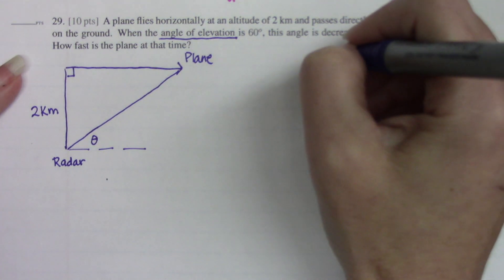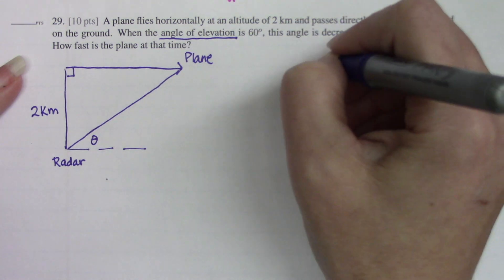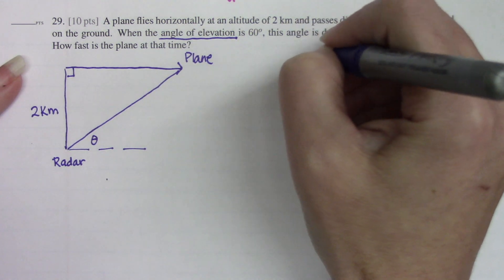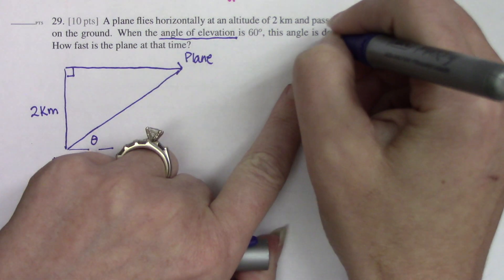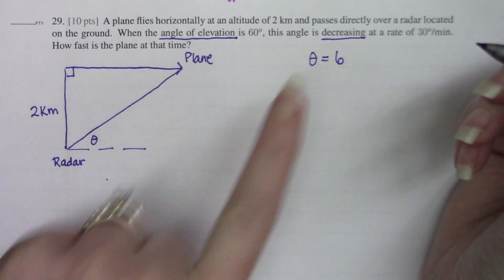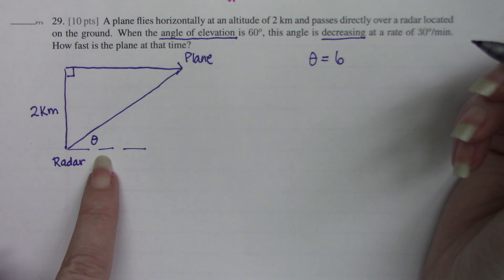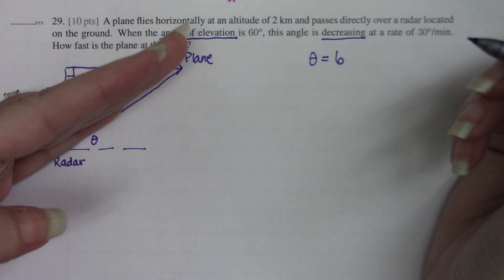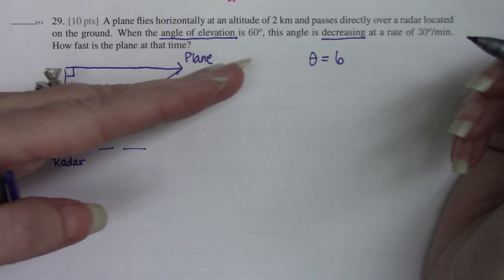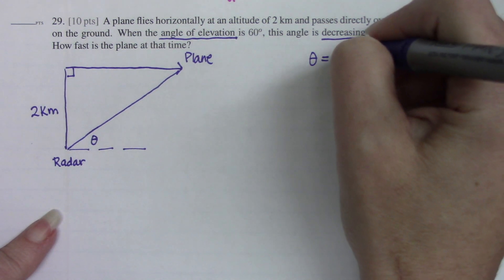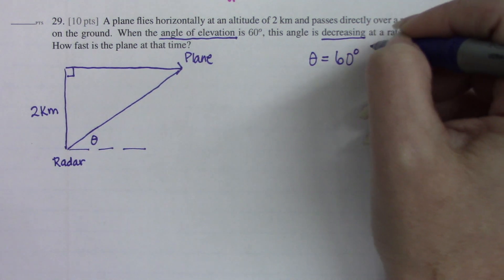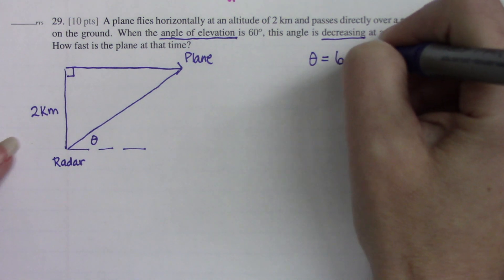Let's now extract our information. So theta at a particular moment in time. Remember the fact that it's decreasing means it's changing. So it's not appropriate to put 30 here. It's just appropriate to label the variable because it's actually going to get smaller as the plane keeps flying horizontally. So our data point of 60 degrees is only happening at this one particular moment in time.